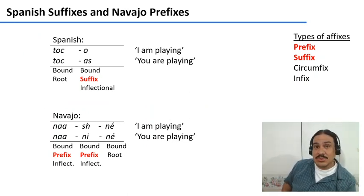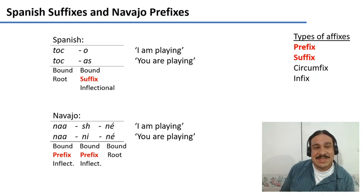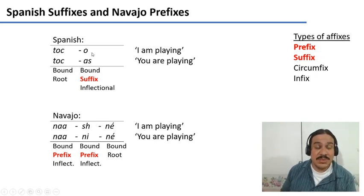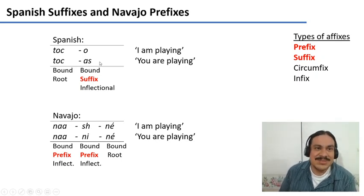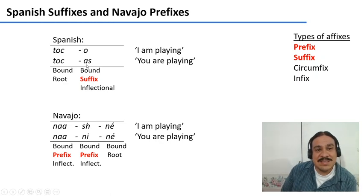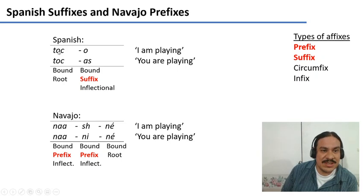Suffixes and prefixes are used for verbal conjugations in many languages. For example, in Spanish we use suffixes to conjugate verbs. You can have a word like 'toco,' meaning I play a musical instrument, or 'tocas,' meaning you play a musical instrument. We have the stable root 'toc-' and two suffixes: one that means first person present and the other second person present. So these suffixes conjugate the verb.